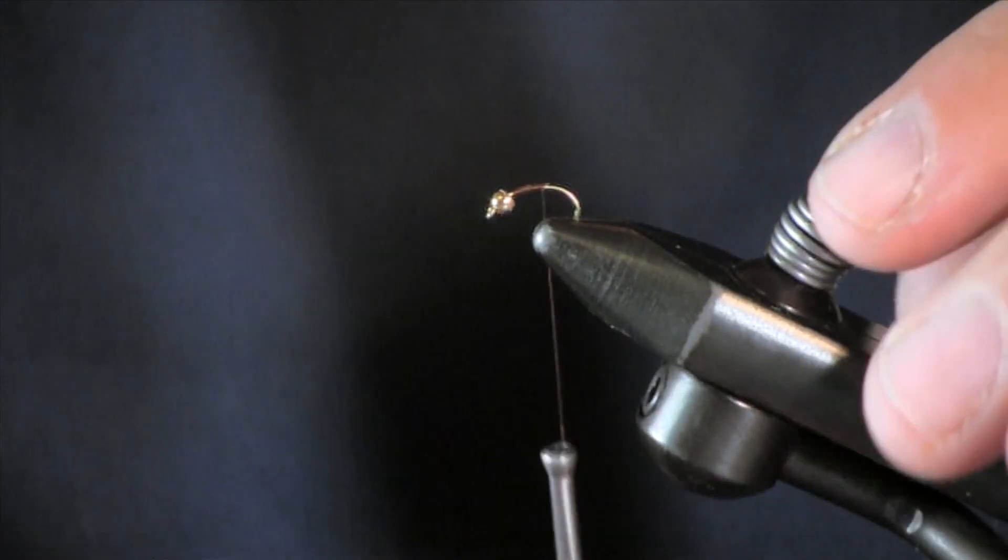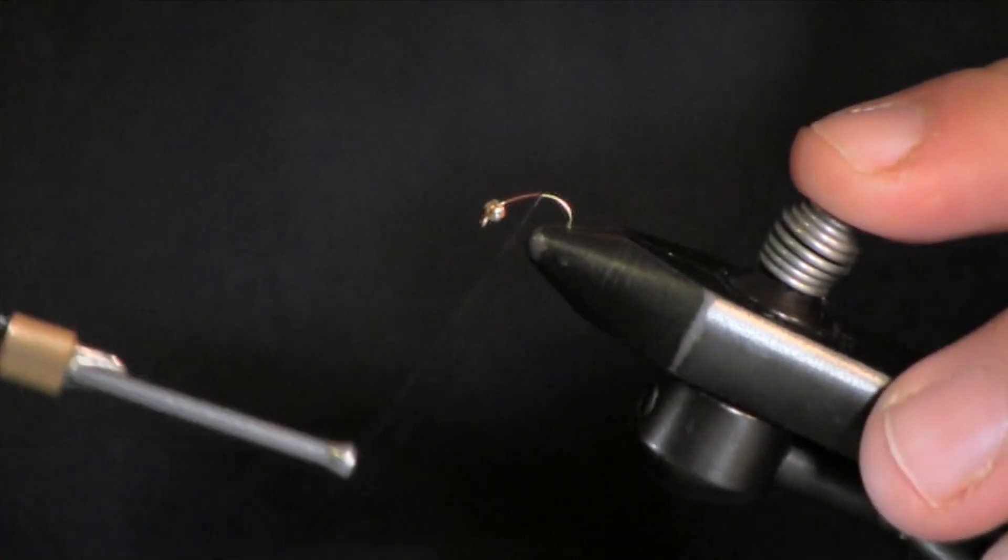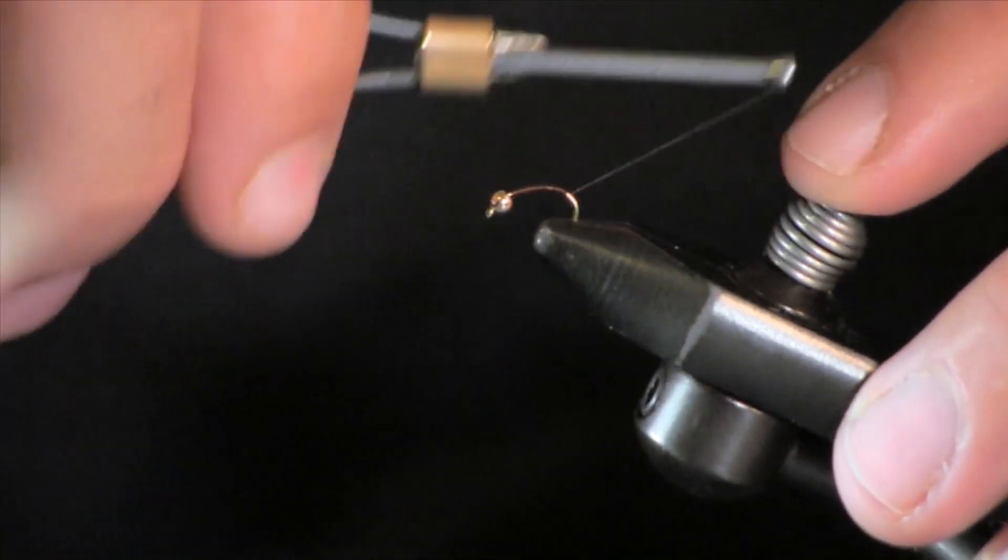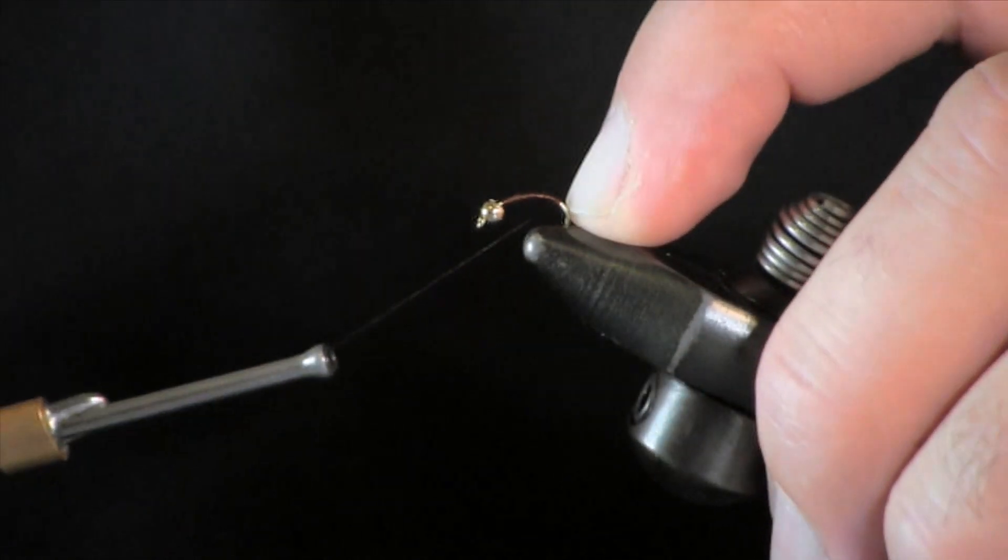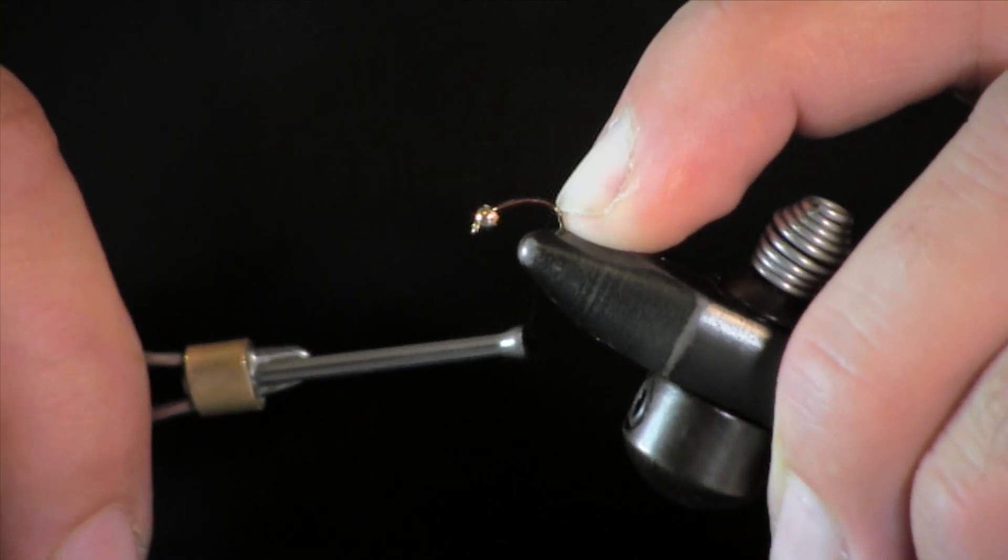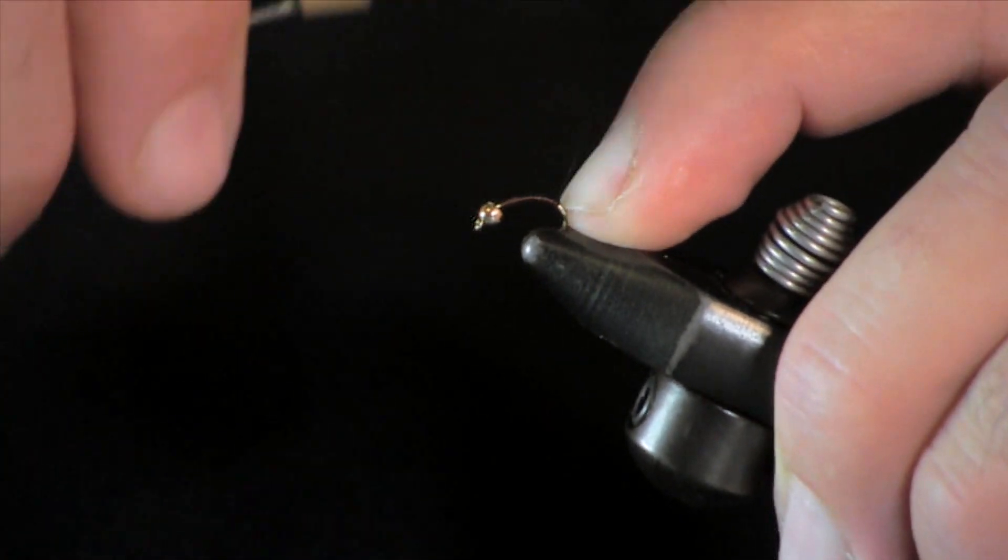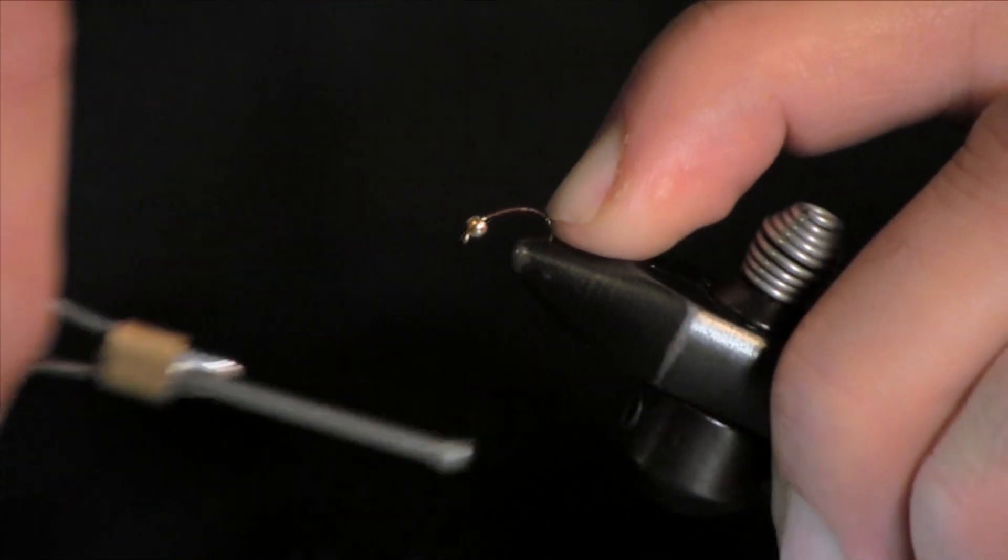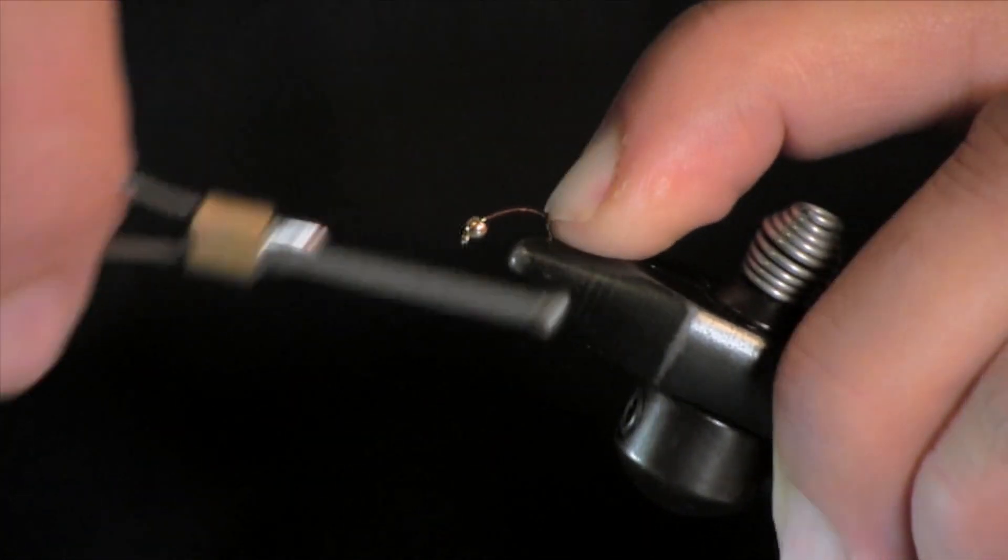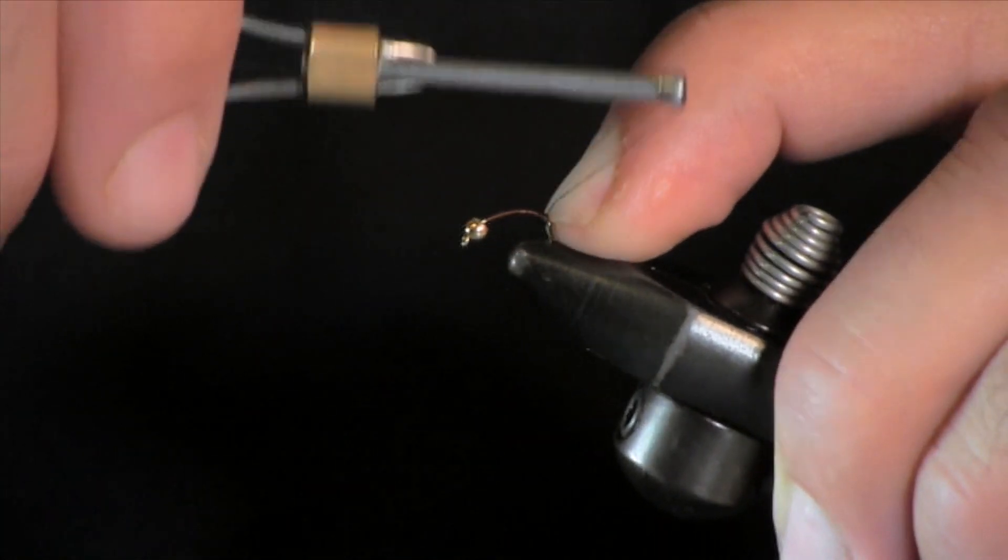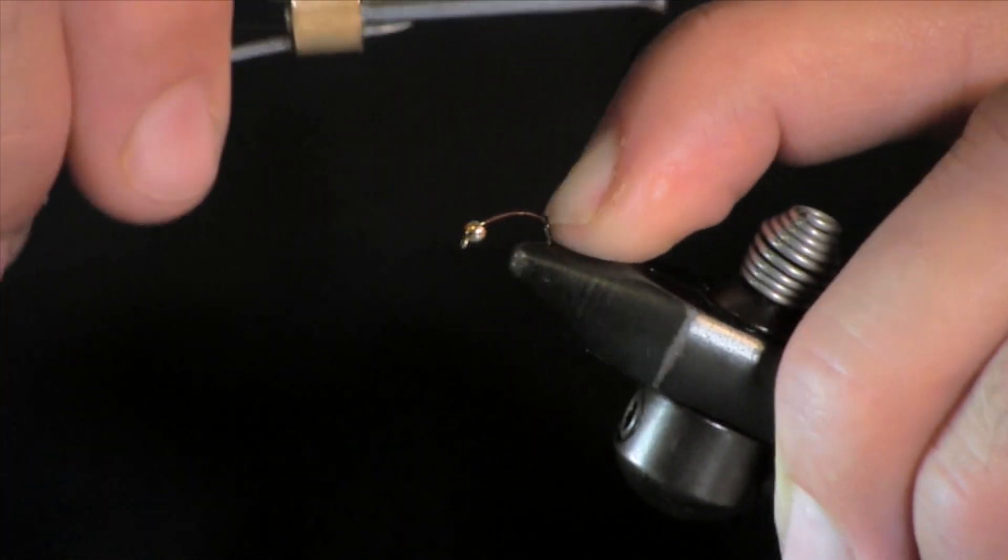Okay then the first thing we are going to put on is the tail. So we are going to wrap our thread back to the back. And we are going to use goose biots for the tail. What I like to do on this is to get the goose biots to spread out. I am going to take my finger right behind here and just hold where I want it to be. I am going to make a ball of thread and by holding your finger there you wrap up against your finger. It helps to not let the thread roll off the back and it will make that little ball that you want there.